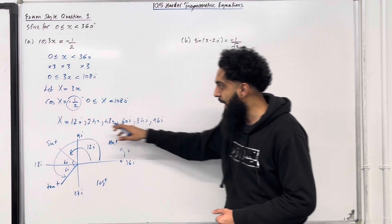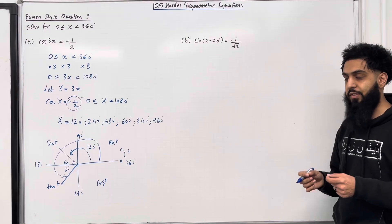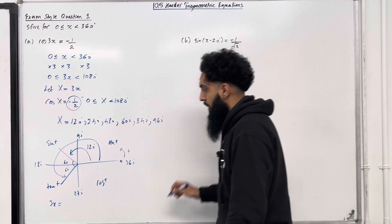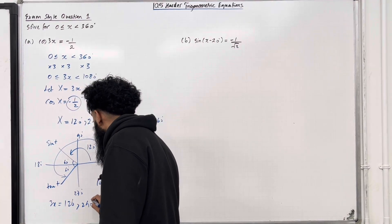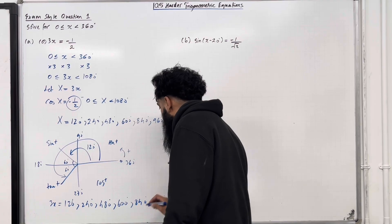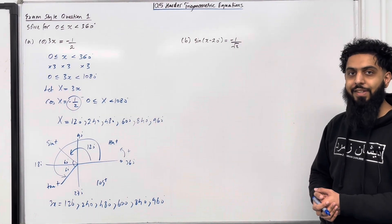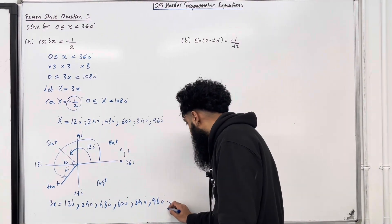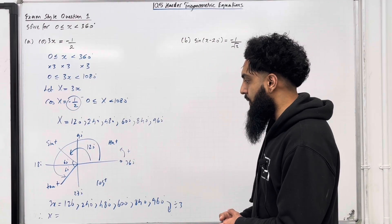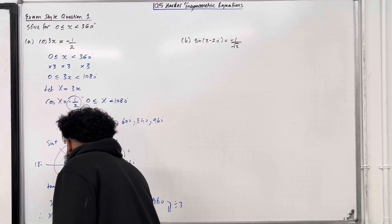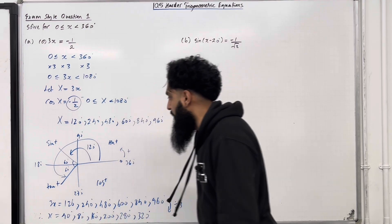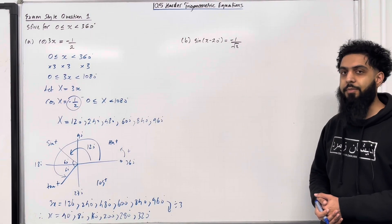These are all the solutions for capital X in this interval. We are solving for lowercase x, so we replace capital X with 3x. So 3x equals 120, 240, 480, 600, 840, and 960 degrees. Dividing each by 3 gives the solutions for lowercase x: 40 degrees, 80 degrees, 160 degrees, 200 degrees, 280 degrees, and 320 degrees. That completes part A of exam style question 1.